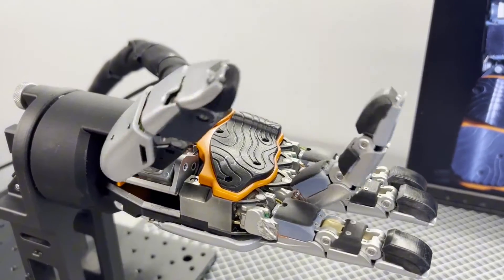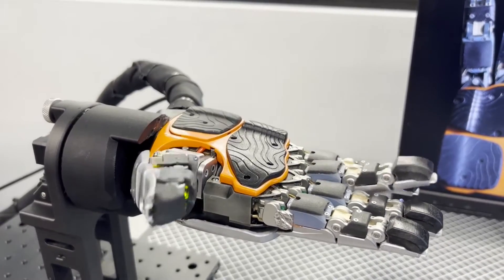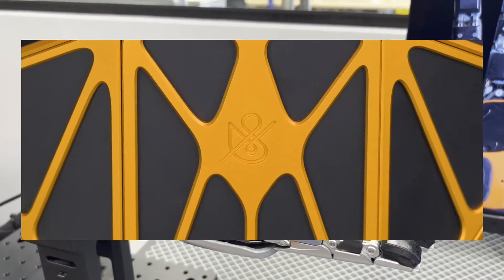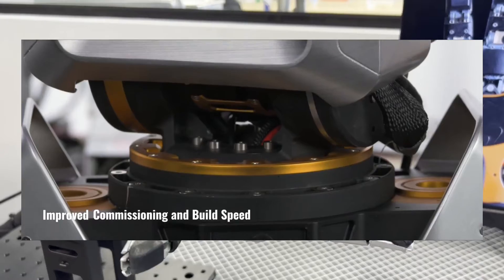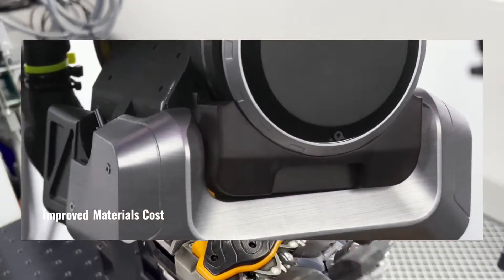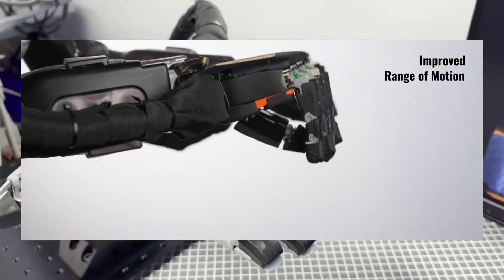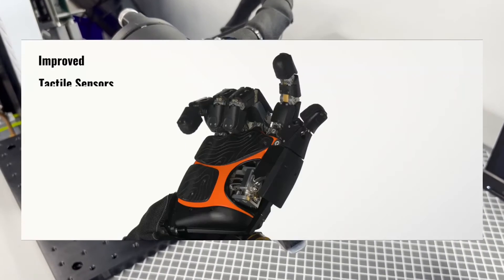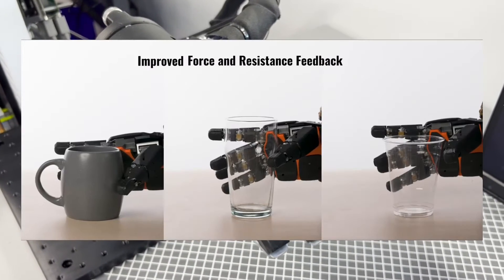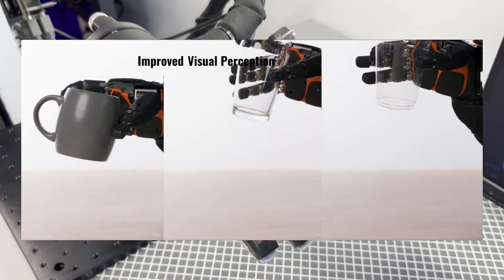It boasts increased uptime, meaning it can operate for longer periods without the need for maintenance or rest. The range of motion has been improved, particularly in the wrists, hands, and elbows, allowing for more nuanced and complex movements. This generation is also lighter in weight, reducing the strain on its systems and potentially increasing its operational lifespan. Additionally, the cost of materials has been lowered, making it a more economically viable option for businesses.